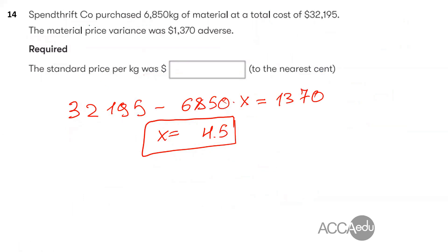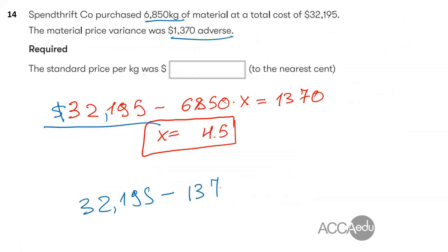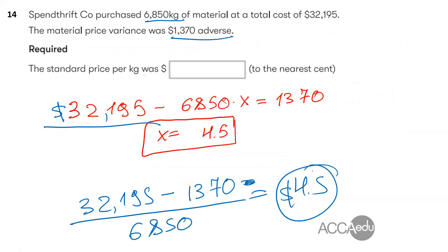Question 14 is a straightforward one about material price variance. The variance was adverse, meaning we bought at a higher cost. We bought 6,850 kilos for a certain amount. Comparing actual cost to standard cost and dividing by actual kilos purchased gives us the standard price of $4.50 per kilogram.